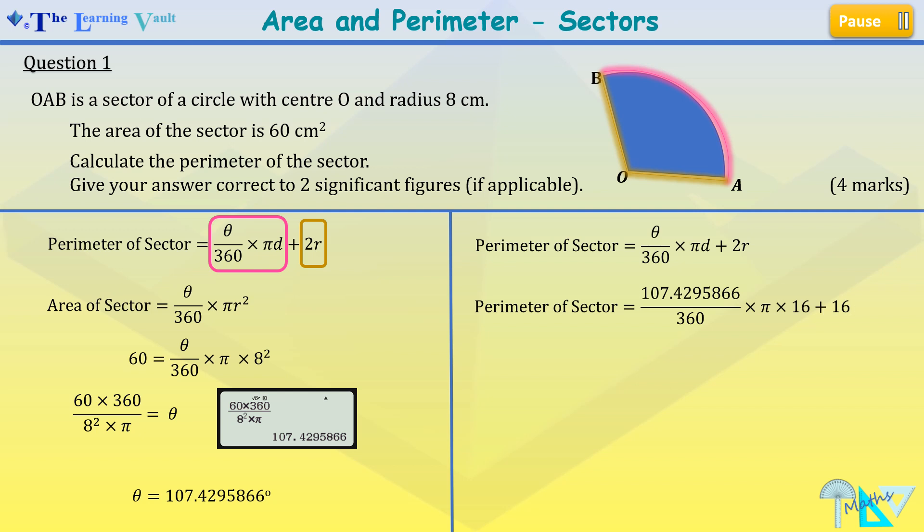We input our values from what we've got for theta. Our 2r is 16 and our d, which is the diameter, is also 16.